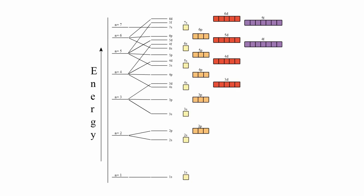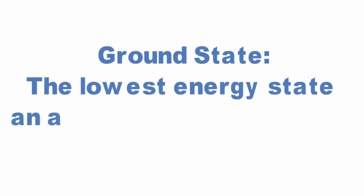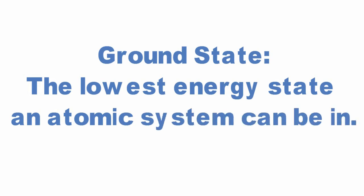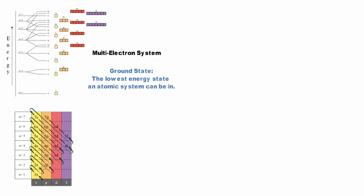However, in a multi-electron atom, the subshells have different energy levels. We are usually interested in the lowest energy state that an atomic system can be in. This is known as its ground state. This means that we want to know about a system in which the lower energy orbitals fill before the higher energy orbitals. This idea is referred to as the Aufbau principle.